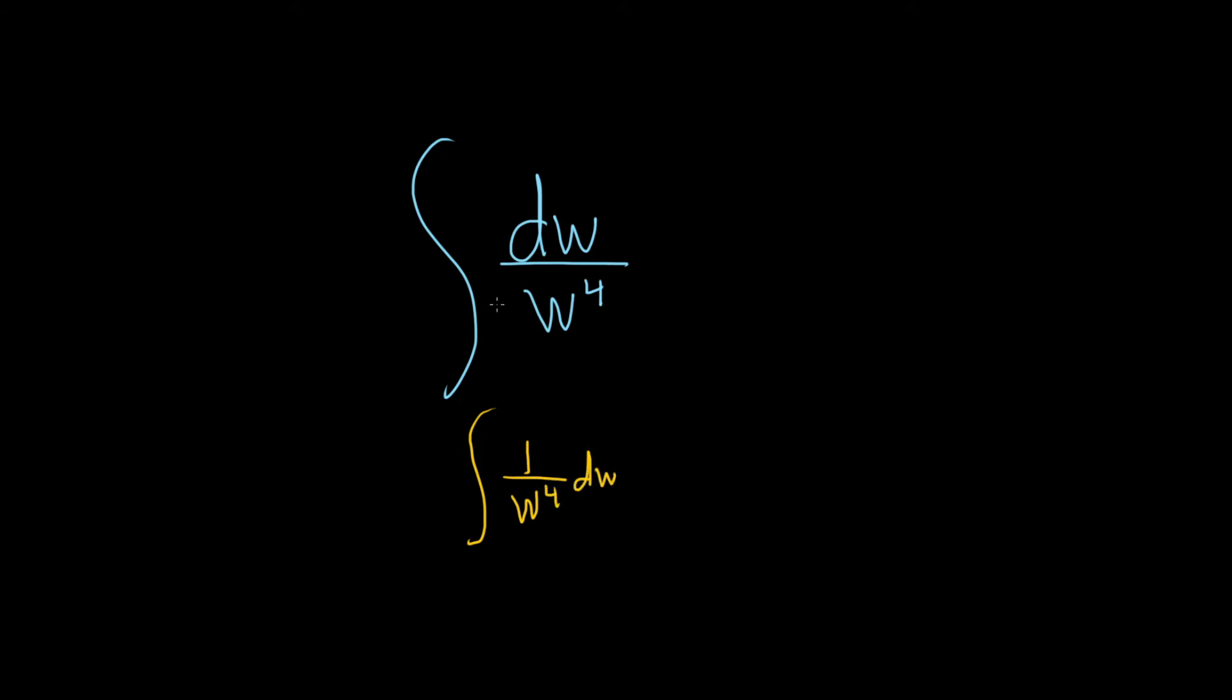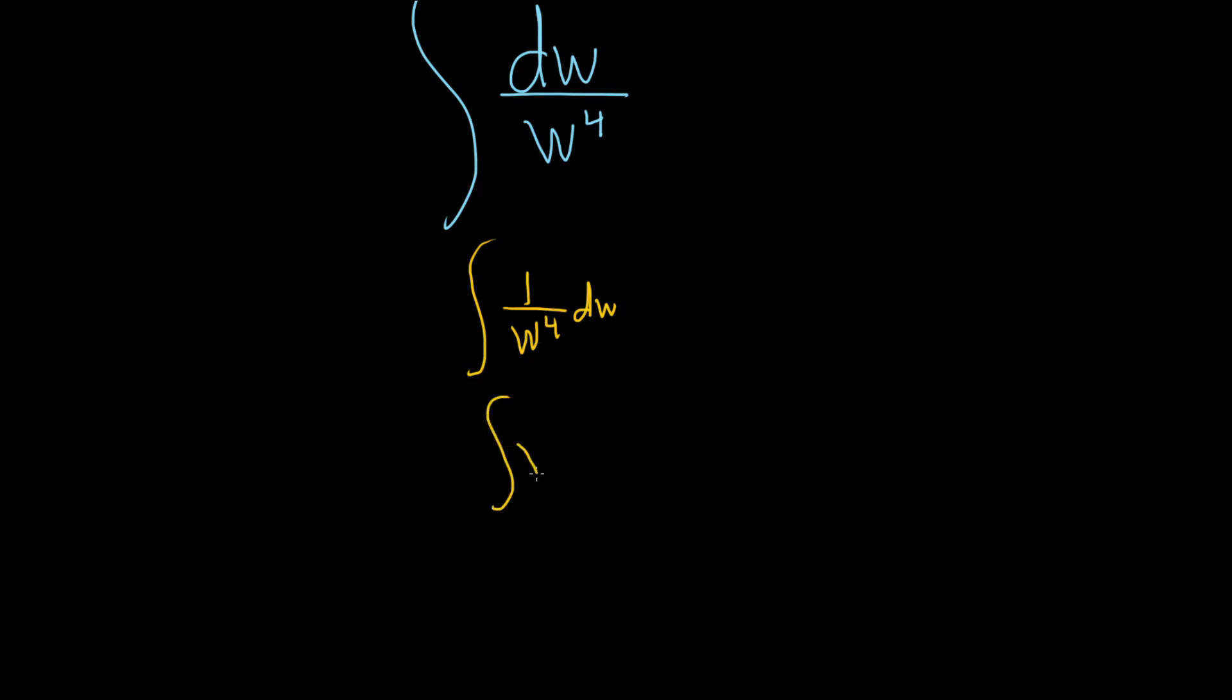So these actually mean the same thing. Now to integrate this, we want to write this as something to a power. So what we can do is we can bring this W upstairs. And when we do that, the exponent will become negative. So this is W to the negative 4 dW.